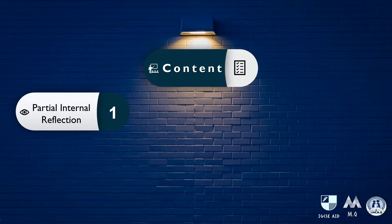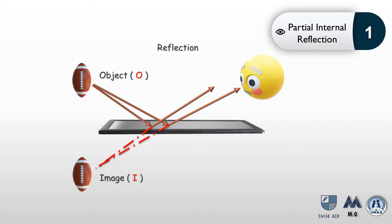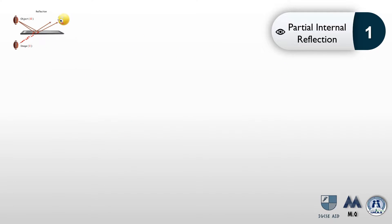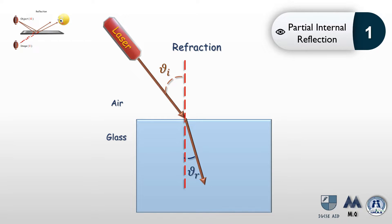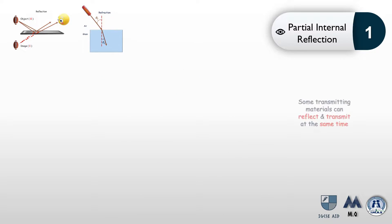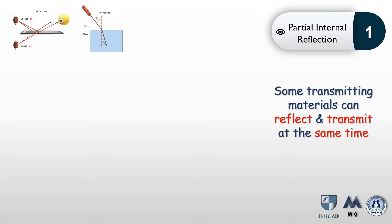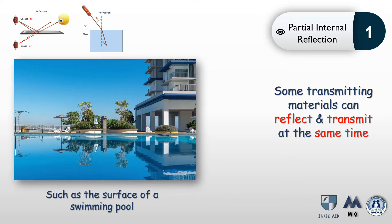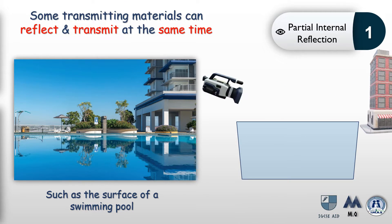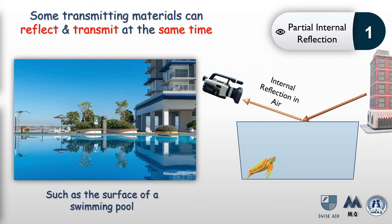Let's start with partial internal reflection. We already talked about reflection and refraction in previous lessons. Some transmitting materials can reflect and transmit light at the same time, such as a swimming pool. As a light ray from a building hits the surface of the water, part of it is reflected internally in air towards the camera, allowing it to observe the reflection of the building.